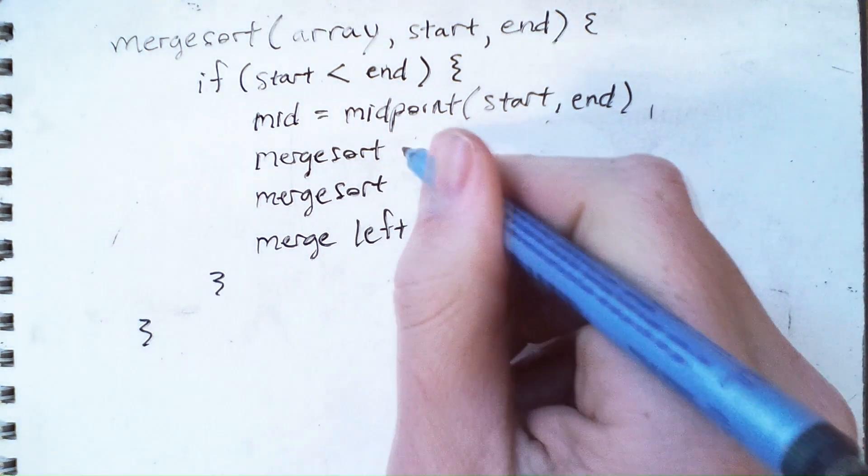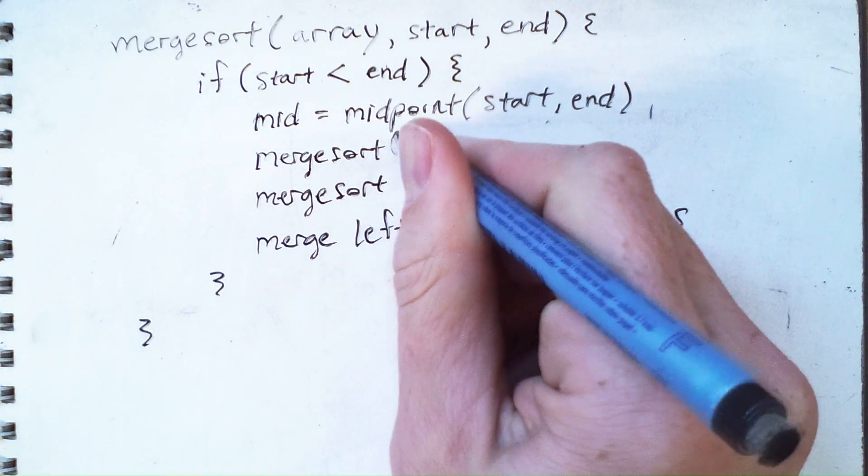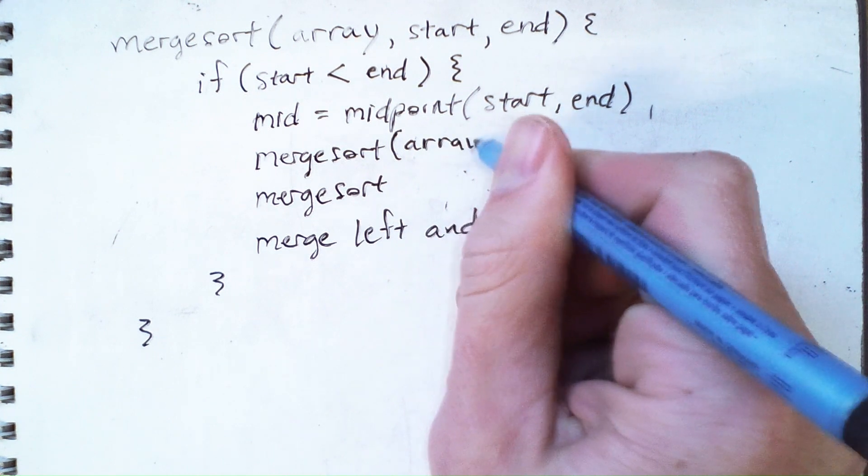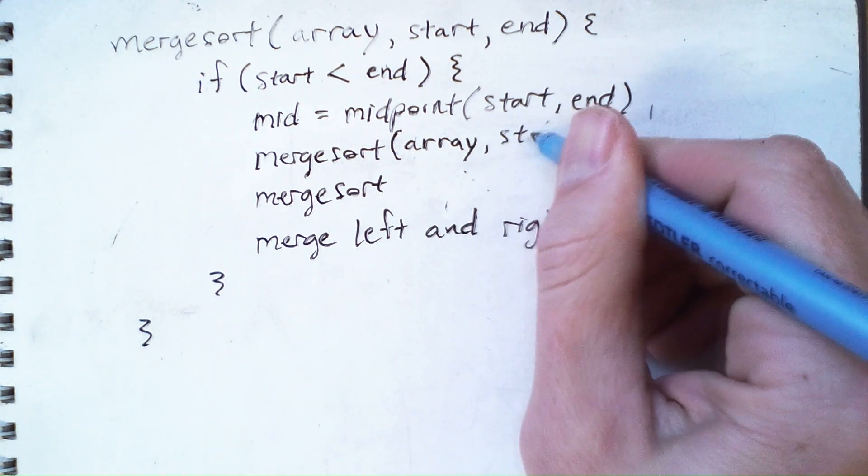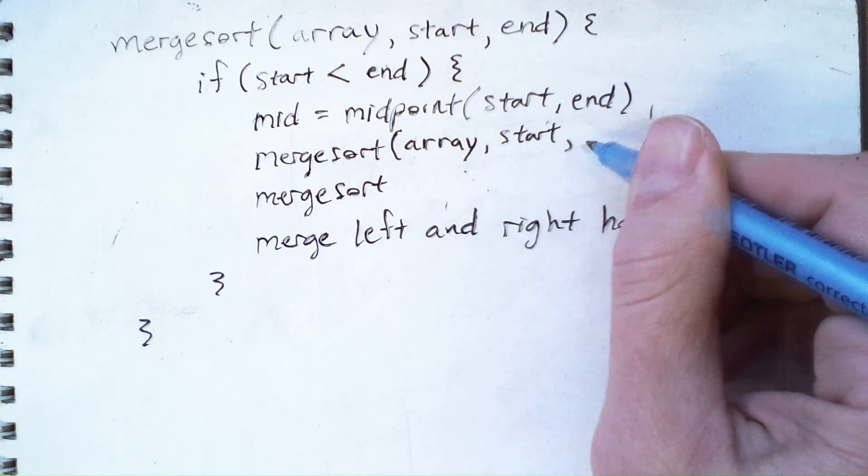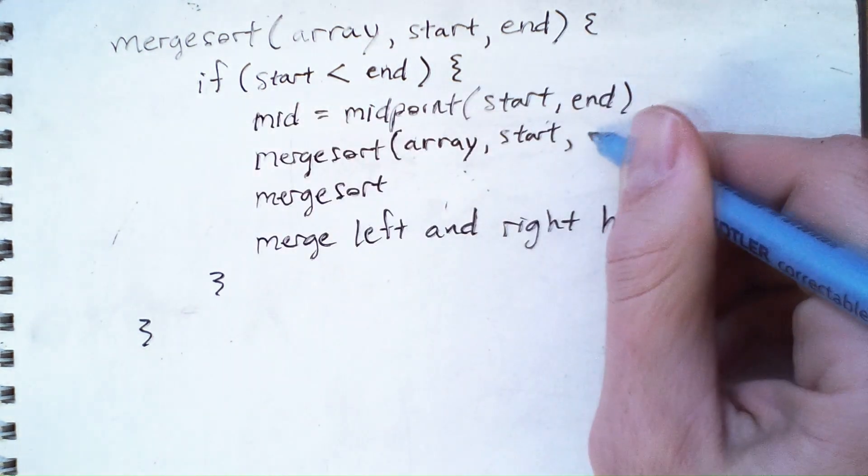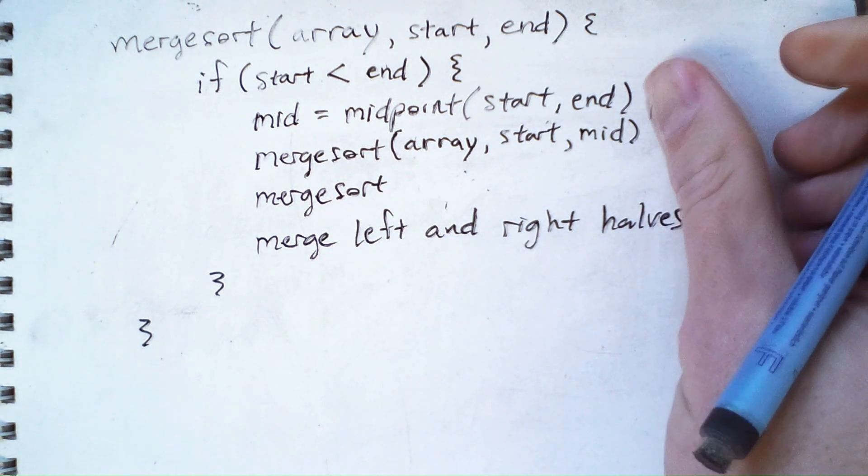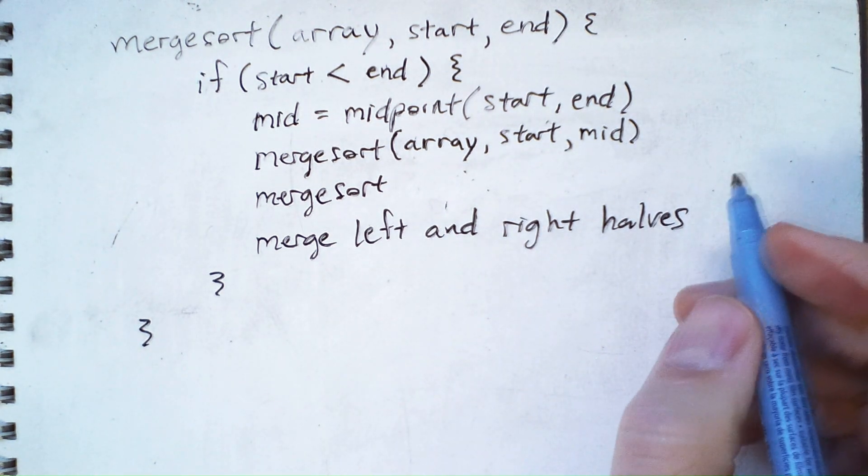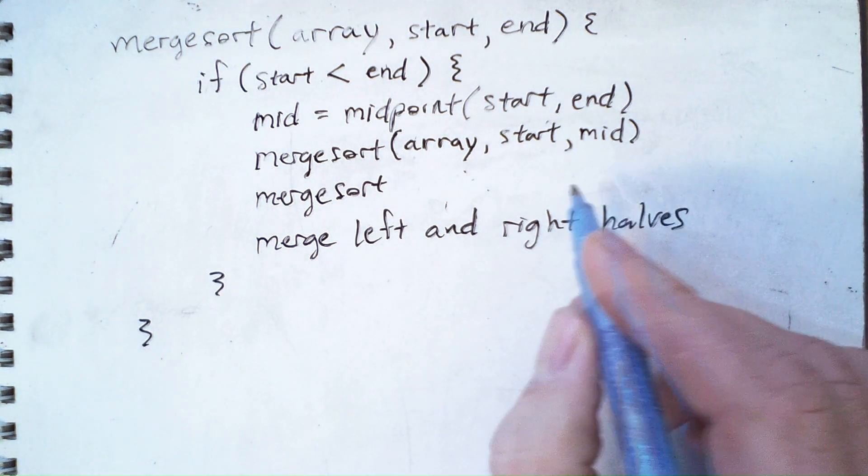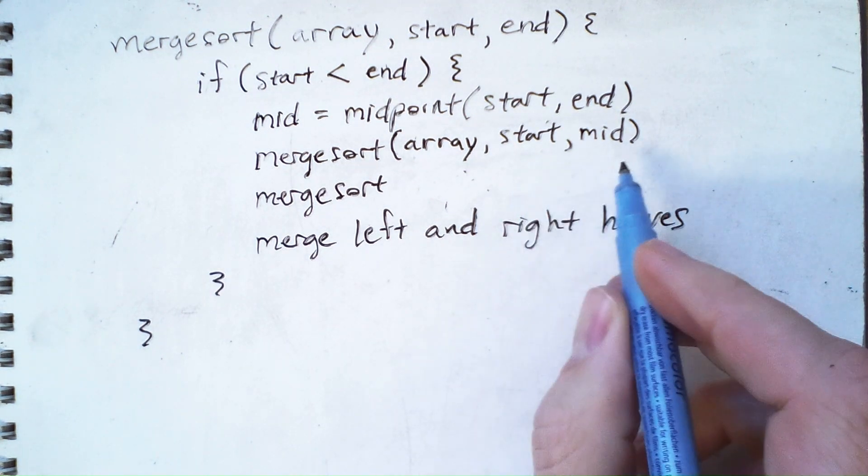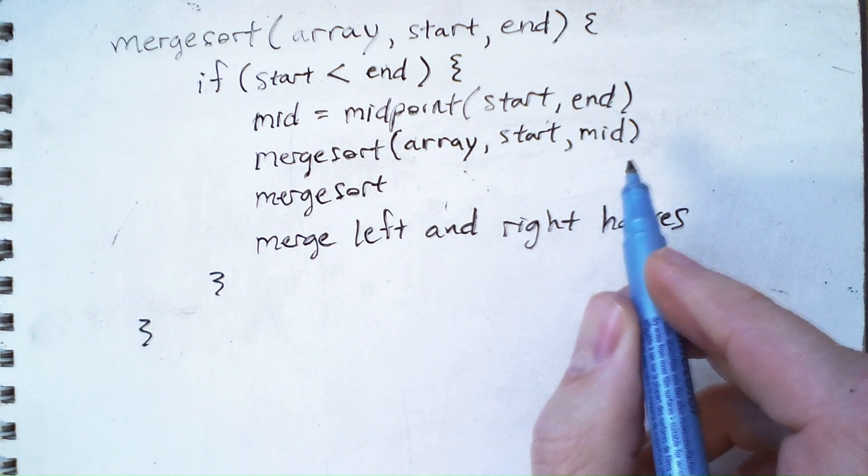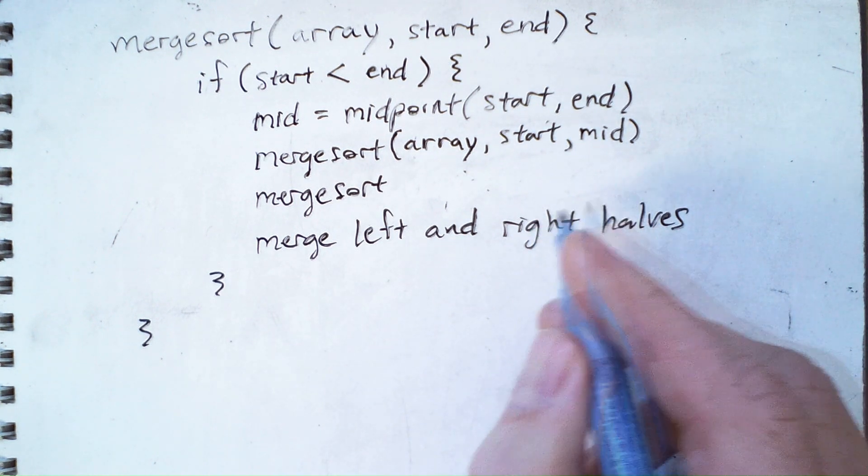So the left half of the array is going to be the subarray from the start index up to mid, this midpoint. Now, there are some slight variations you could do here. Basically, like whether it's start to mid or start to mid minus one depends on your convention. And as long as you're consistent everywhere, it'll work.